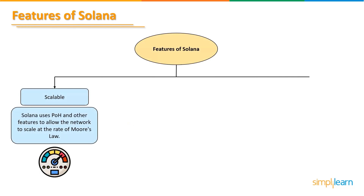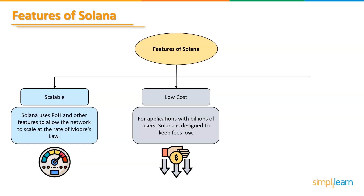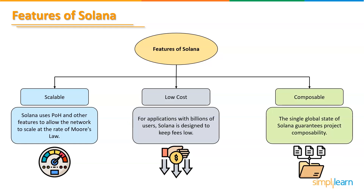Let's talk about the features that make Solana unique and popular. Scalable: Solana uses proof of history and other groundbreaking features to allow the network to scale at the rate of Moore's law. Low cost: Solana is designed to keep fees low, so you never have to worry about rising fees as your user base grows. Composable: The single global state of Solana guarantees project composability — multiple shards and layer-2 systems never need to be dealt with.